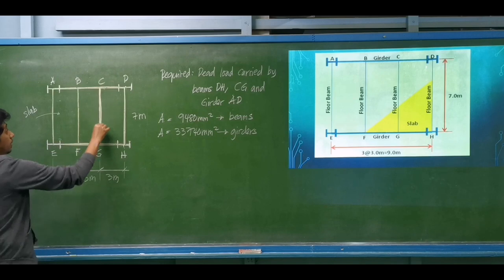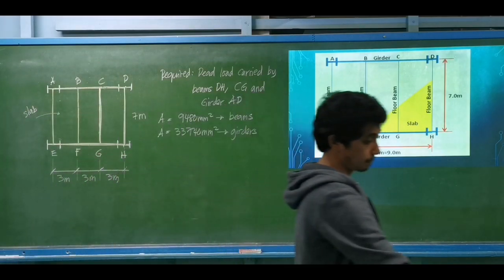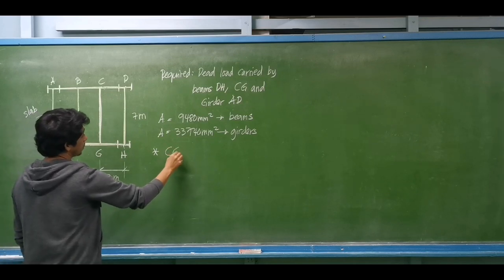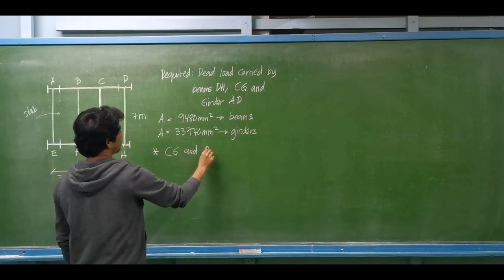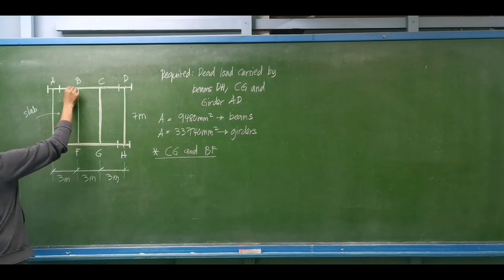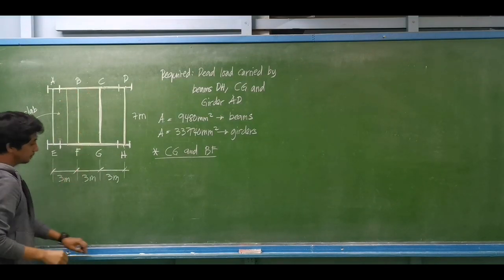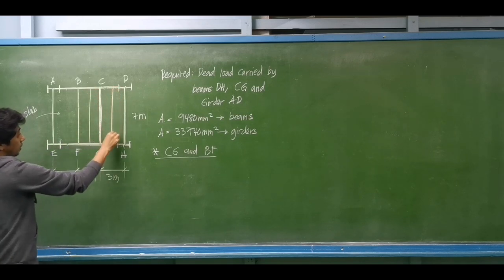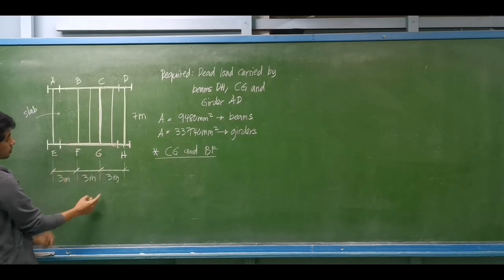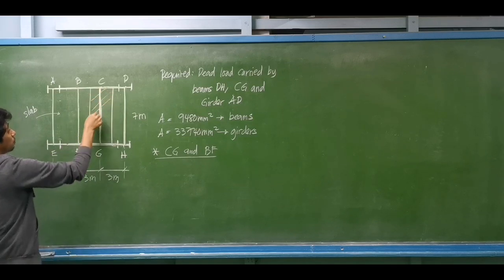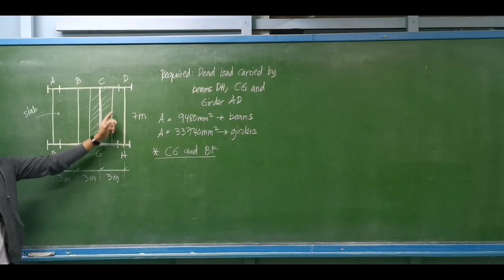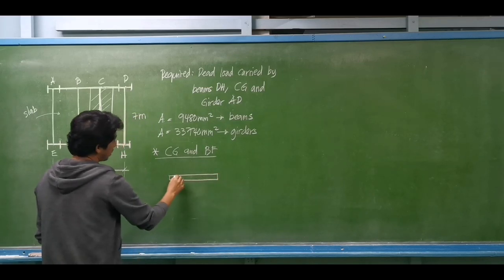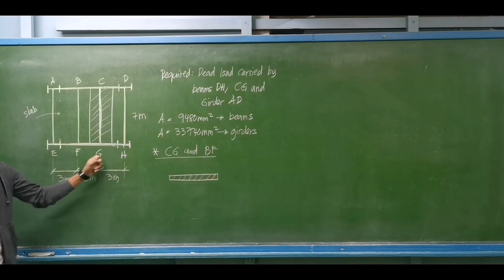Let's start with beam CG — this is the same solution for beam CG and beam BF. We need to consider the tributary width. The tributary width is the area of responsibility of member CG, which is the center-to-center distance to its nearby beams. If we draw the corresponding cross-section, the tributary width to be carried by beam CG and beam BF is one-half of 3 meters plus one-half of 3 meters, which equals 3 meters.